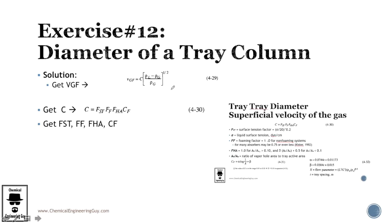Okay, now the solution. First get the BGF factor. Remember that for this we will require this C constant, which is here. Depends on the foaming, on the surface tension, depends on the geometry, the size of the tray, the holes, and so on. So before, because we already have the densities of the liquids and gas, we need to calculate C, so C is the focus of this exercise.